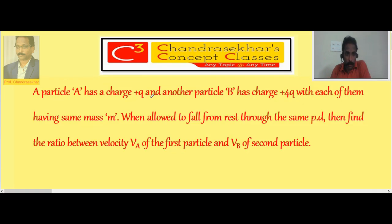A particle A has charge +Q and another particle B has charge +4Q, with each of them having same mass M. When allowed to fall from rest through the same potential difference, then find the ratio between velocity VA of the first particle and VB of the second particle.